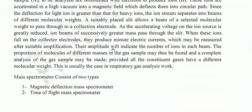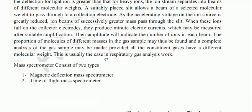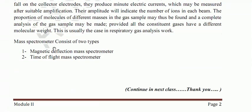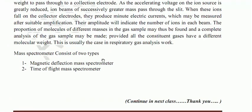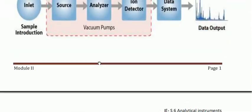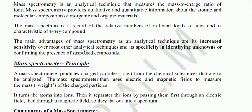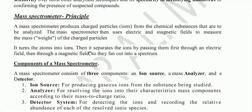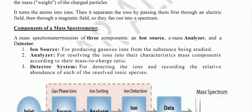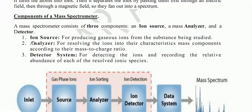The mass spectrometer consists of two types: one is the magnetic deflection mass spectrometer and the other is the time-of-flight mass spectrometer. Those will be discussed in the next class. The main components are the ion source, analyzer, and detector.